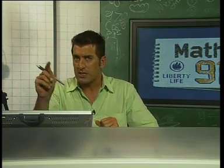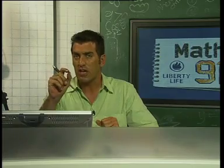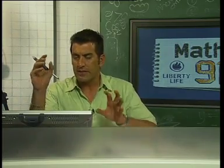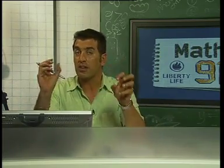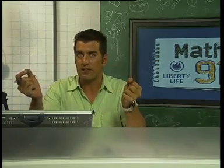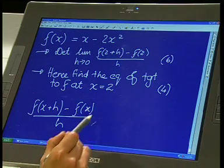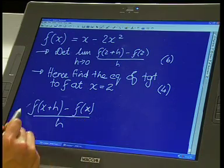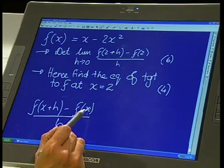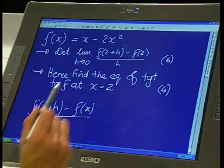f of x plus h minus f of x is a change in y value and then the distance of the difference between my two x values is h. So it's nothing other than a gradient. If we look at this formula just by itself, that is an average gradient between the two points x and x plus h. In our case here, the point 2 and then h units away from 2.